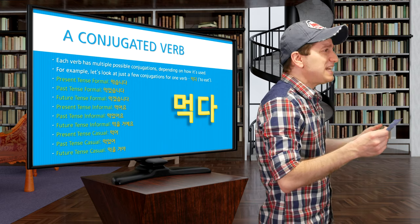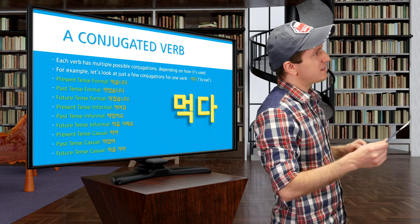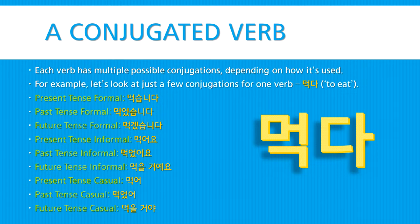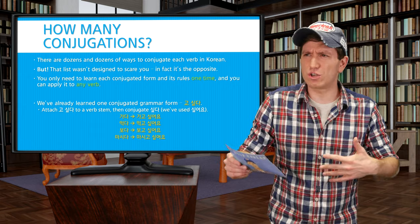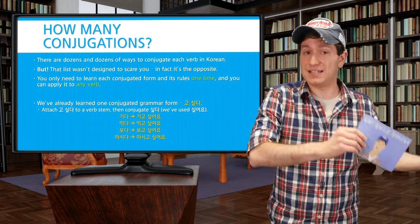What is a conjugated verb? Each verb in Korean can have multiple possible ways of conjugating it, depending on how you're using it. For example, let's look at a few conjugations for 먹다 (to eat): present tense formal 먹습니다, past tense formal 먹었습니다, future tense formal 먹겠습니다, present tense informal 먹어요, past tense informal 먹었어요 (I ate), future tense informal 먹을 거예요 (I will eat), present tense casual 먹어, past tense casual 먹었어, and future tense casual 먹을 거야. There can be dozens of possible ways to conjugate a verb from its dictionary form.